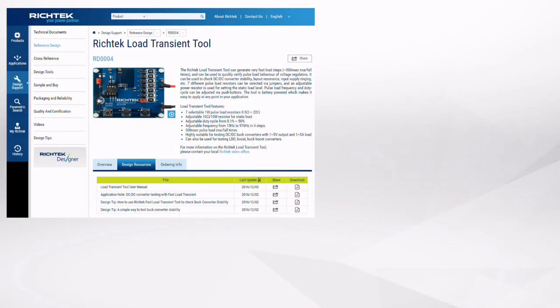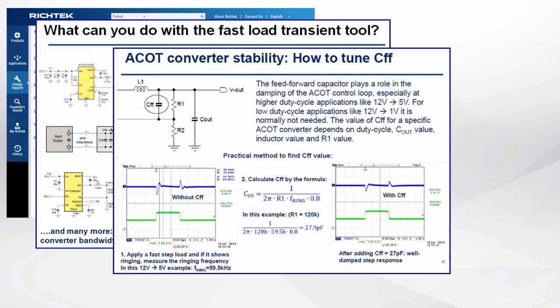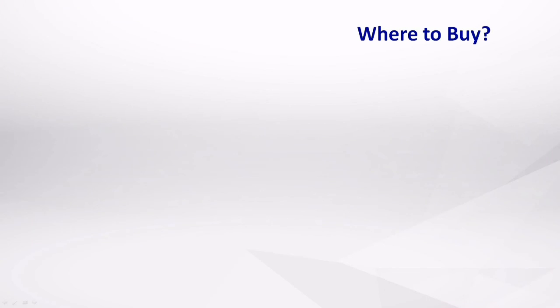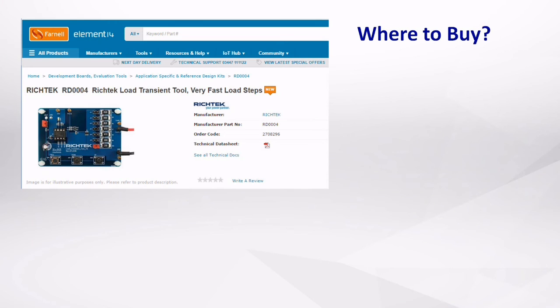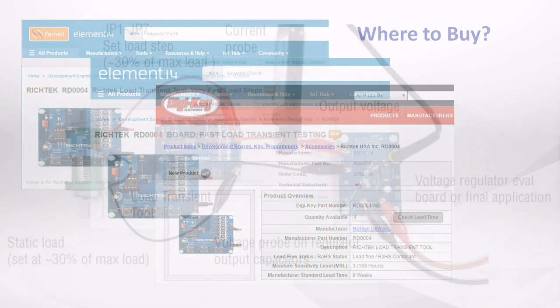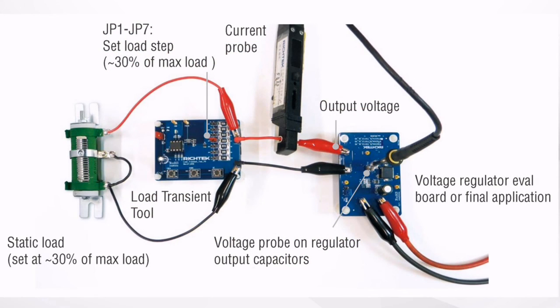I hope this example has given you an idea of what you can do with the load transient tool. Please note that different converter types have different stability criteria. The documentation that comes with the tool includes links to design tips and application notes, with more information how to test DC-DC converter applications with the load transient tool. The RichTech load transient tool is available at Farnell, Element 14, and DigiKey. If you are often working with DC-DC converters, I highly recommend to get this handy little tool for your lab testing.